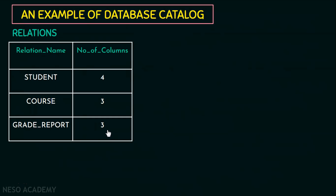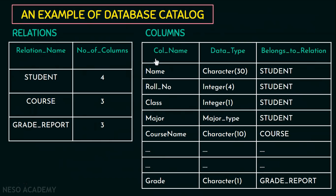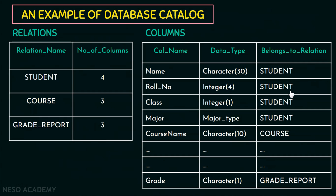Also in our catalog we can have another table which defines the columns present in each relation, their data type, and to which table that column belongs. Based on our university database example, the column student name has the data type character of size 30 and it belongs to the student table. Similarly, the column roll number is of integer data type and belongs to the student relation. So this is an example of a database catalog where a description of the database is stored.